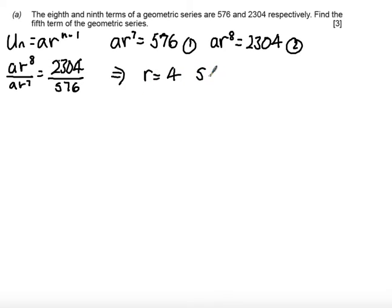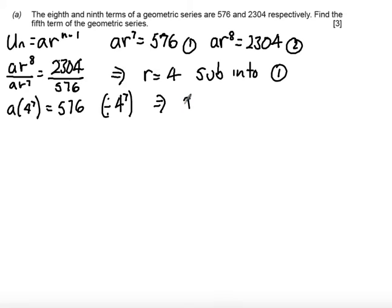Once I know that r is equal to 4, we can find the first term. It doesn't matter which equation you sub it into. I'm going to substitute it into equation 1. So a times 4 to the power of 7 equals 576. If I divide by the 4 to the power of 7, what that leaves us with is that a is 9 over 256.